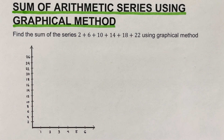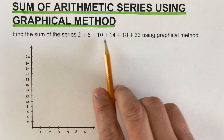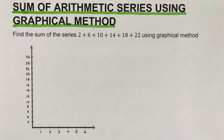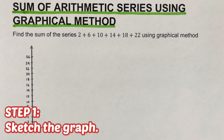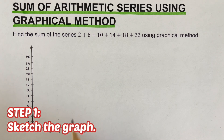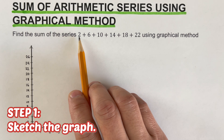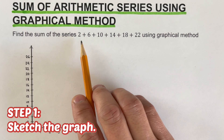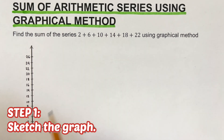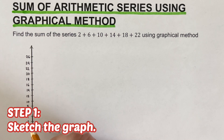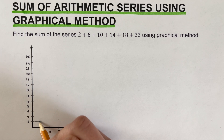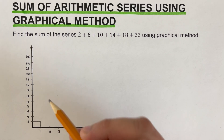There are steps we need to follow in order to determine the sum of this series using the graphical method. The first step is to sketch the graph. I already have the graph set up here. We will sketch the numbers 2, 6, 10, 14, 18, 22 on this graph. The first rectangle represents the first term, which is 2.